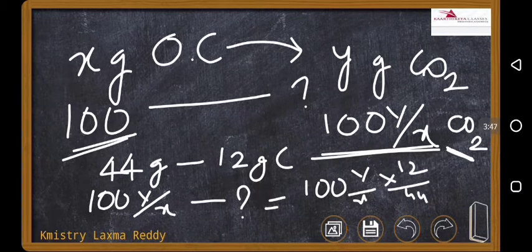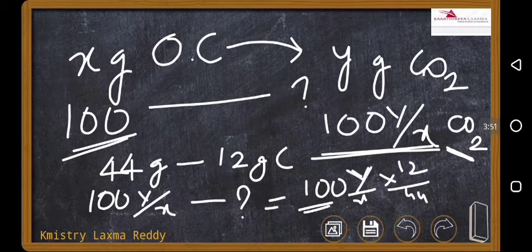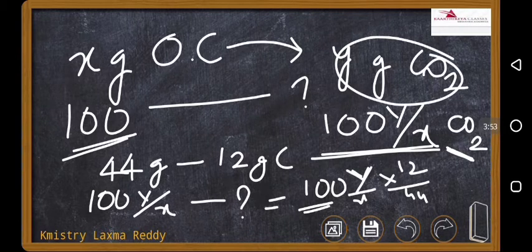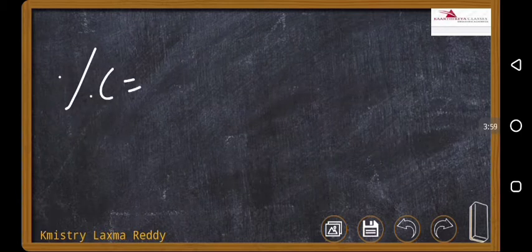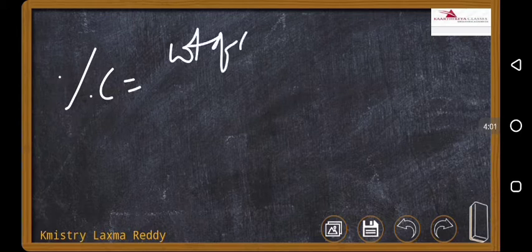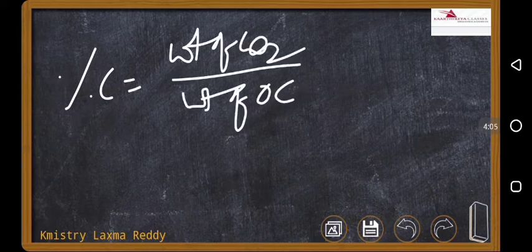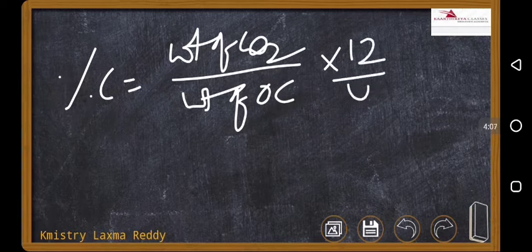100 y by x into 12 by 44. So, this was the formula. 100, 12 by 44. y is weight of carbon dioxide. x is weight of organic compound. So, simply we have written here, percentage of carbon is equals to weight of CO2 by weight of organic compound into 12 by 44 into 100.